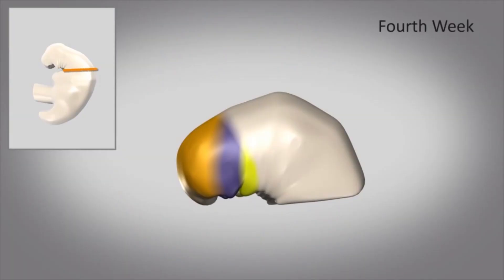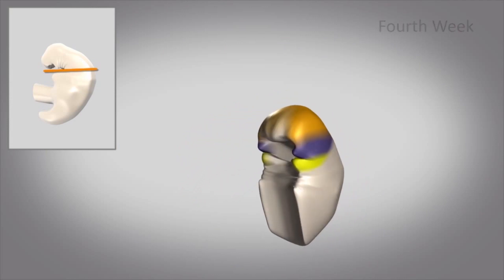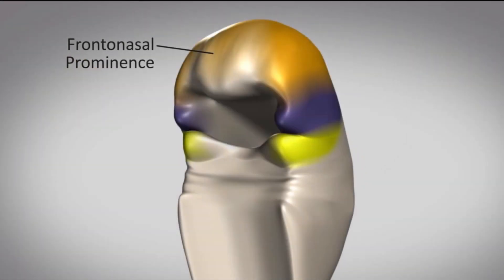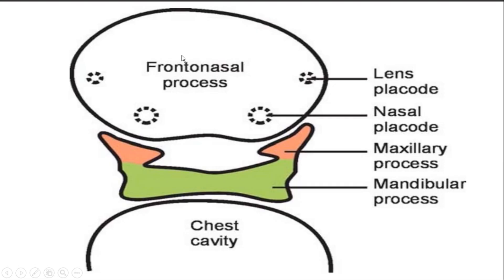Facial development starts by the fourth week and is finished by the eighth week. The face develops from five facial swellings, i.e. the unpaired frontonasal process and the paired maxillary and mandibular processes. Charting this as a schematic diagram, the frontonasal process is white, the maxillary process is pink, and the mandibular process is green. All these processes develop around the stomodeum, or the primitive mouth.